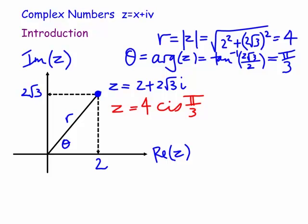How about in polar exponential form? I would write that as z equals 4e to the i theta, which would just be pi on 3.